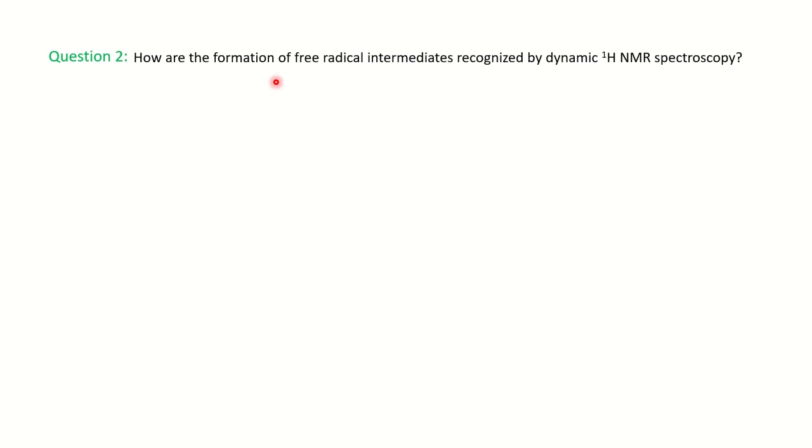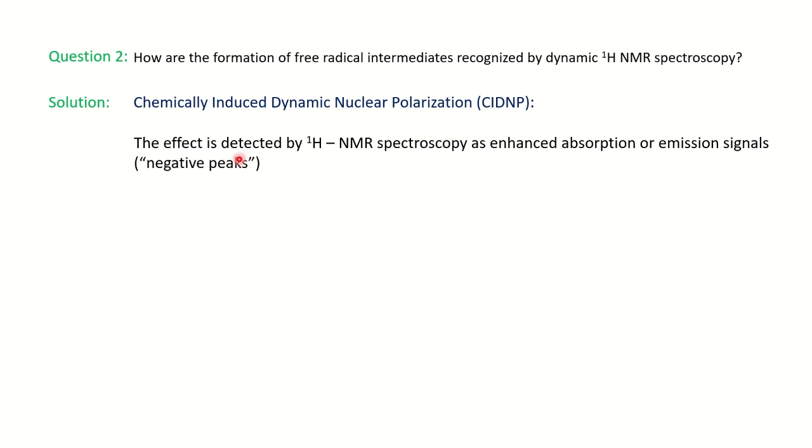The next question is: how are the formation of free radical intermediates recognized by dynamic proton NMR spectroscopy? So free radical intermediates, how we can find out? You might have heard about the technique called CIDNP - chemically induced dynamic nuclear polarization. I have prepared a detailed video on it. I will again share the link. You can watch it. Here a few glimpses on it: what is CIDNP?